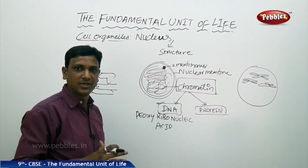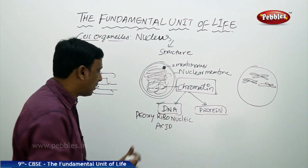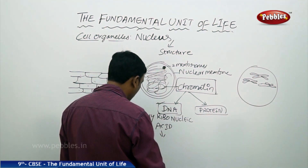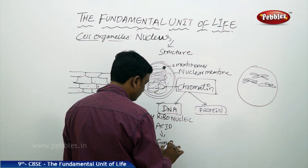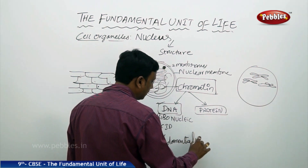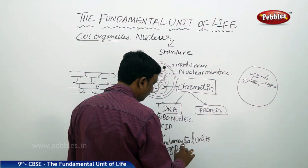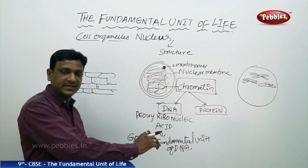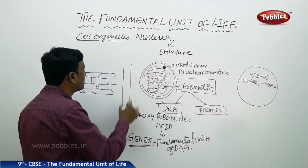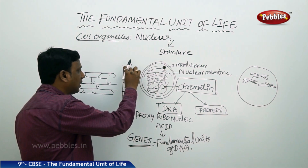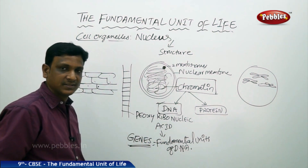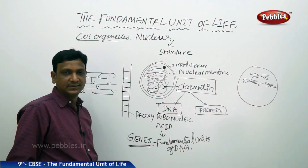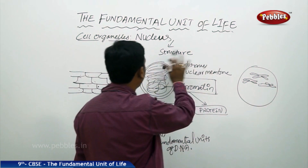DNA consists of all the information about various features of your body. The fundamental units of DNA are genes. Genes are the fundamental units that make up the DNA. Just imagine DNA is a ladder — all parts of the ladder are genes. Genes attach to one another and make a long helical thread-like structure called DNA. This is the structural part of the nucleus.